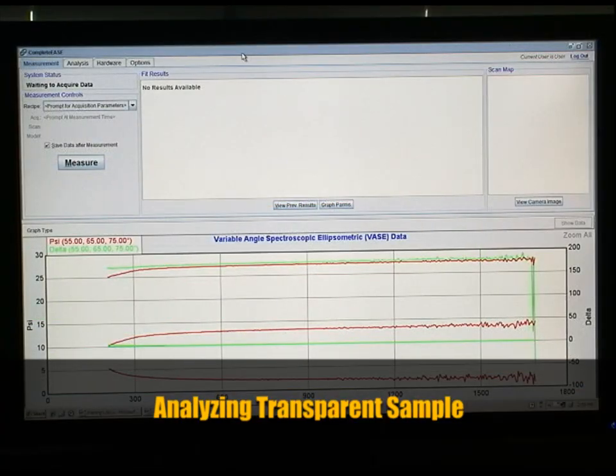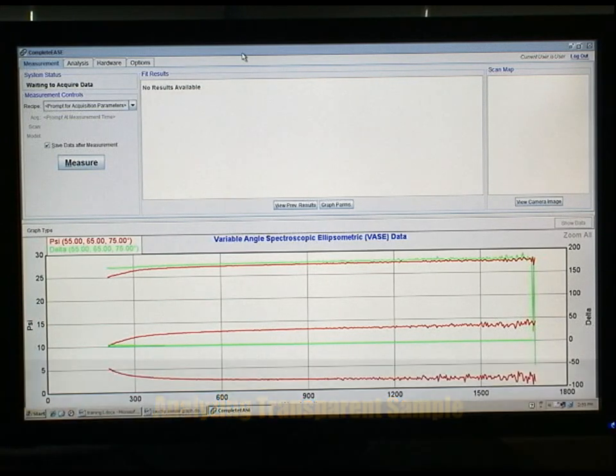In acquiring useful data like the film thickness and refractive index of our material, we've collected our optical data, psi and delta, and different constants. Now what we need to do is build a model to fit our experimental data and analyze our model. We use a regression analysis to fit different parameters in our model to our experimental data.